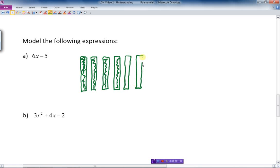So there's 6x, and then we have 5 little squares. Now, they're not filled in because this negative means they're just plain white. The other ones are filled in. The other ones are blank. And that is a representation of 6x minus 5.